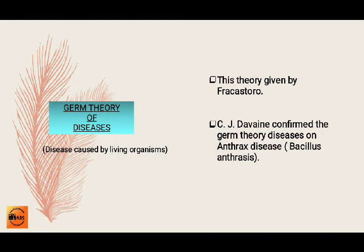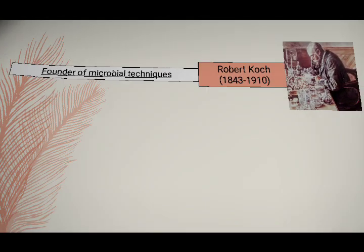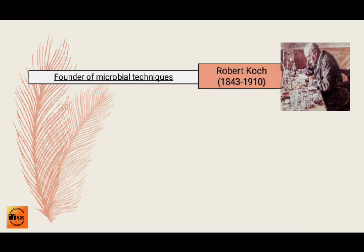The germ theory of disease states that diseases are caused by living organisms. This theory was given by Fracastoro, and later C.J. Davaine confirmed the germ theory of disease on anthrax, which is caused by Bacillus anthracis.